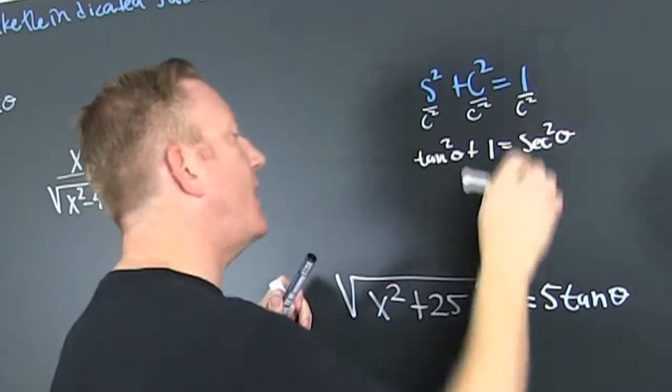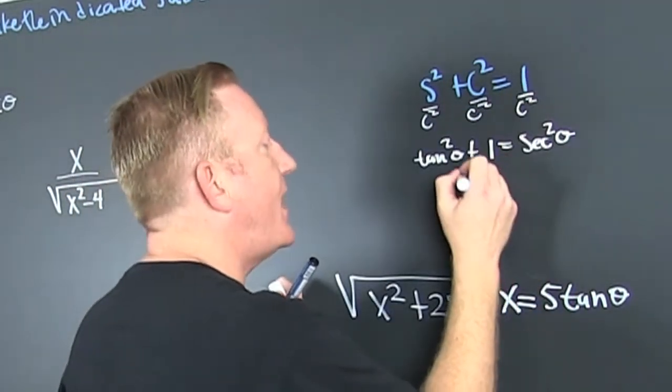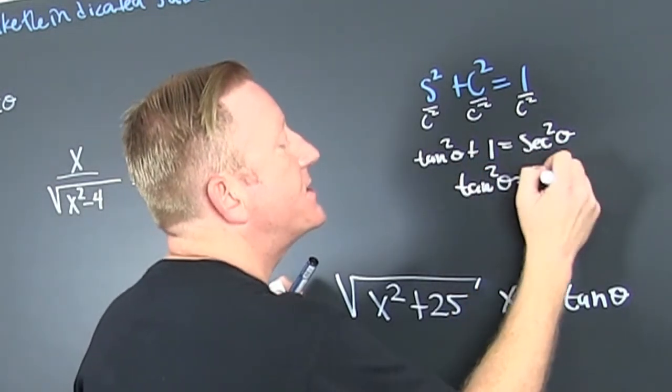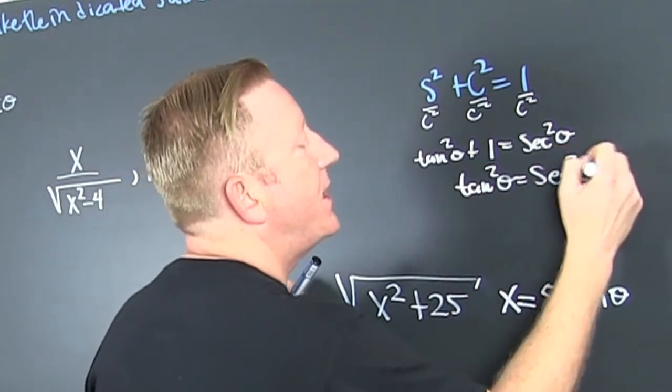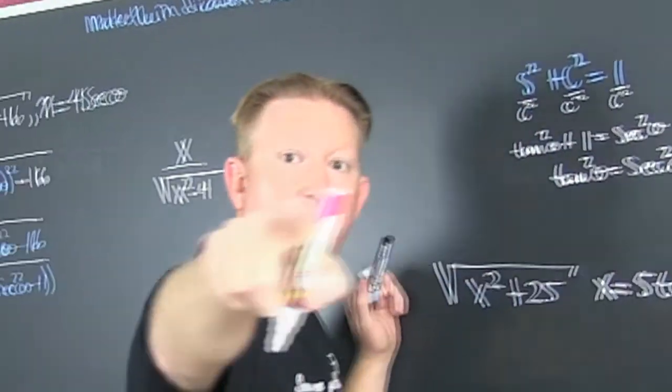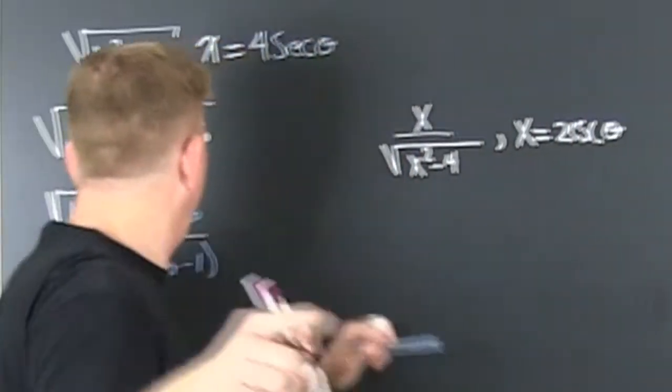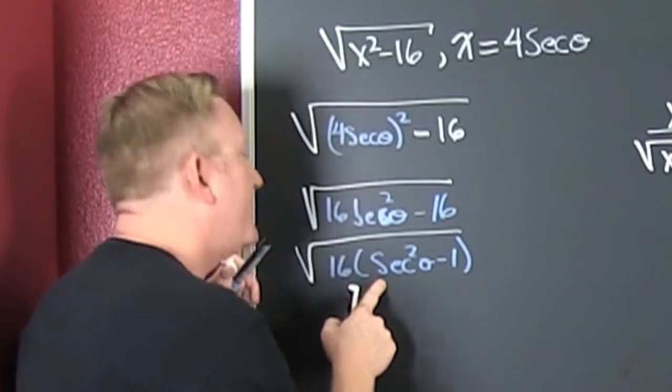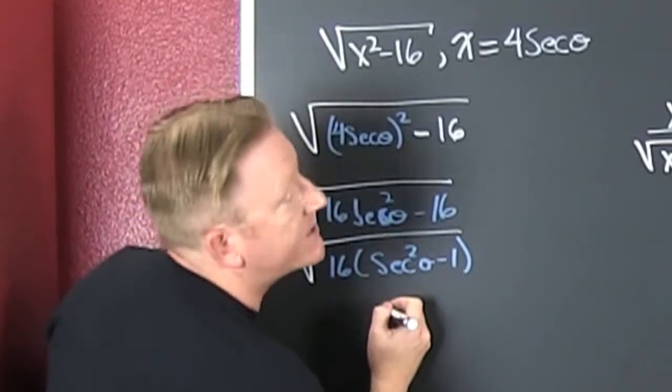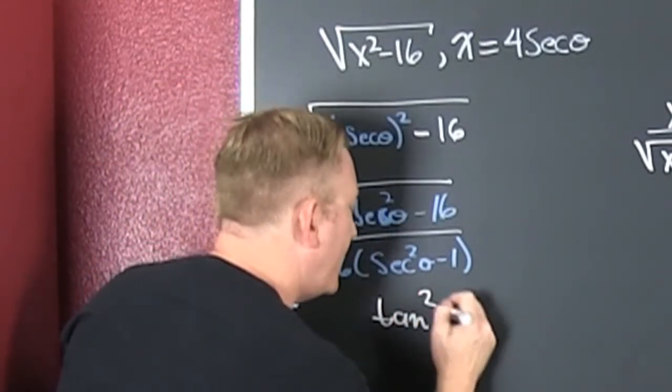But what do we have? We subtract off that 1, and we have that the tangent squared theta, that's going to be the secant squared theta minus 1. Fun. Wait, right here. The secant squared minus 1, that's apparently the tangent squared theta.